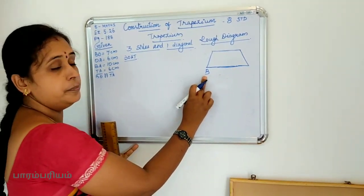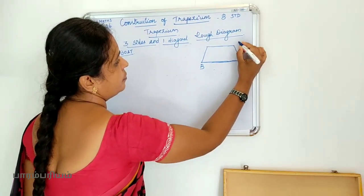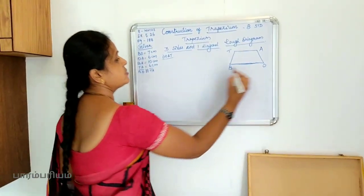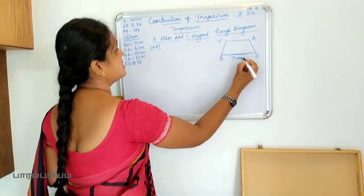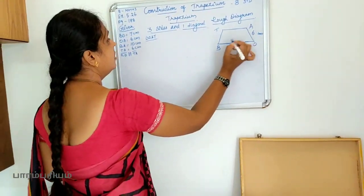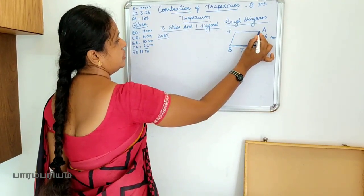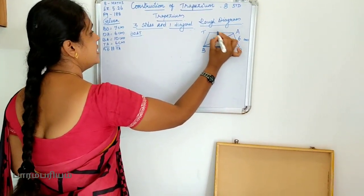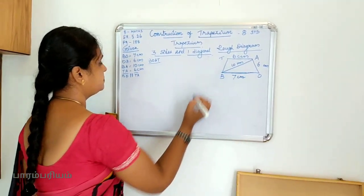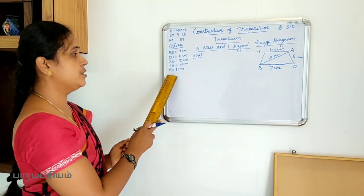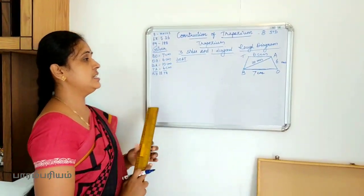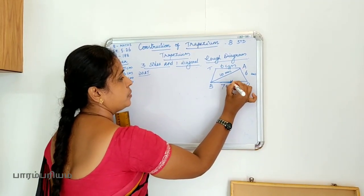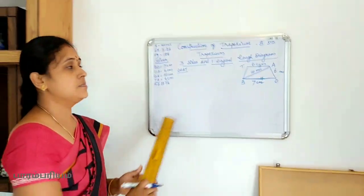We have a trapezium BOAT. The measurements are: BO = 7 cm, OA = 6 cm, BA (diagonal) = 10 cm, and TA = 6 cm. Also, BO is parallel to TA — these two sides are the parallel sides of the trapezium.